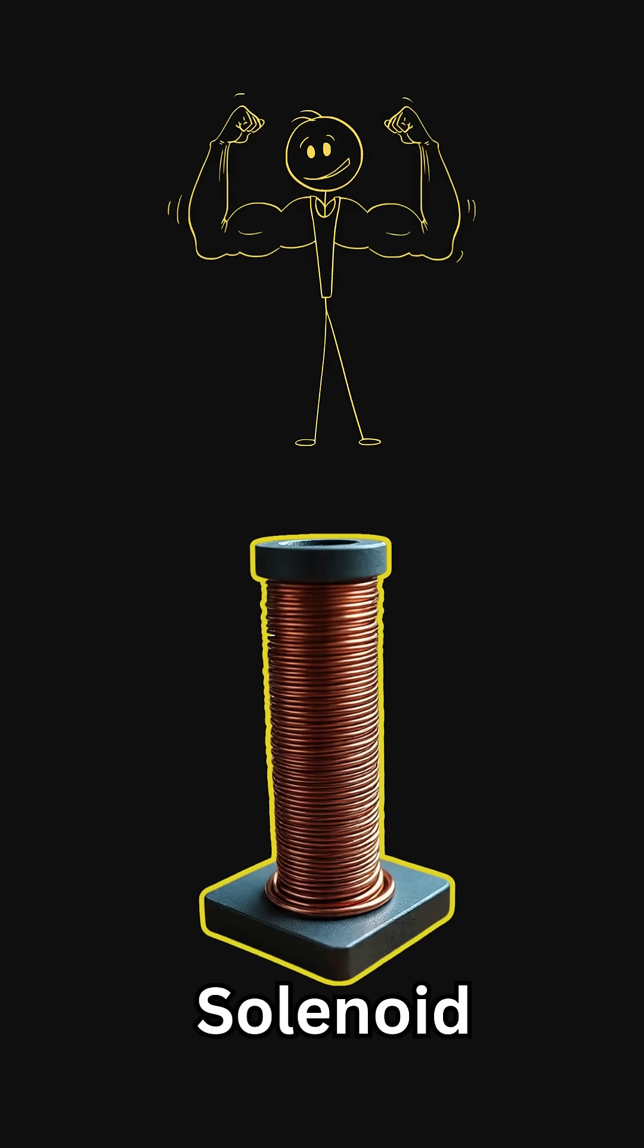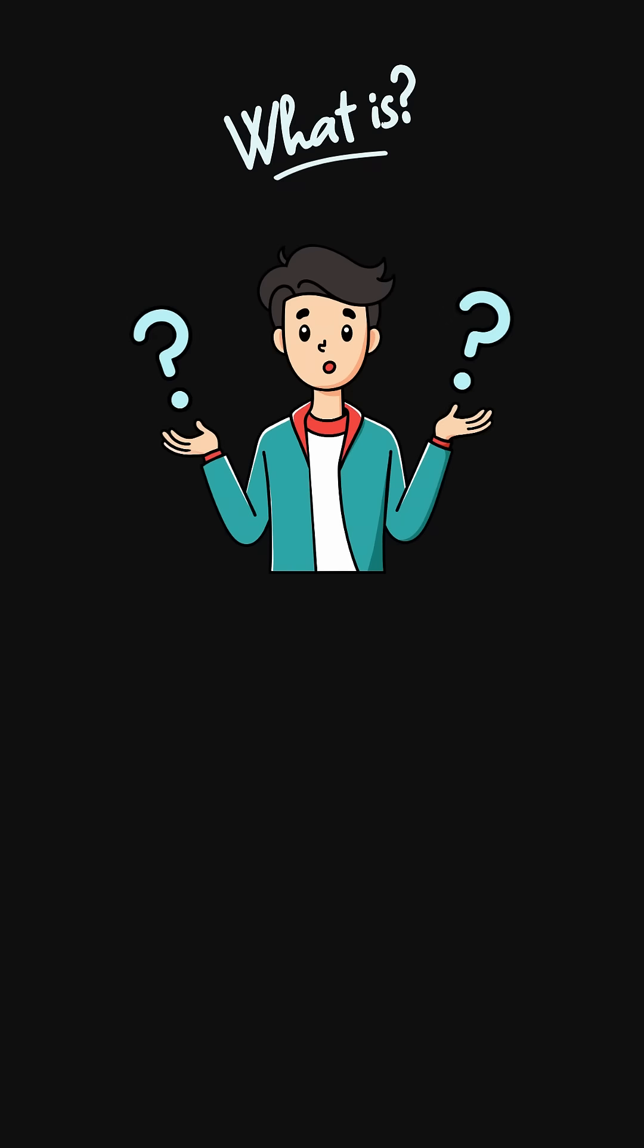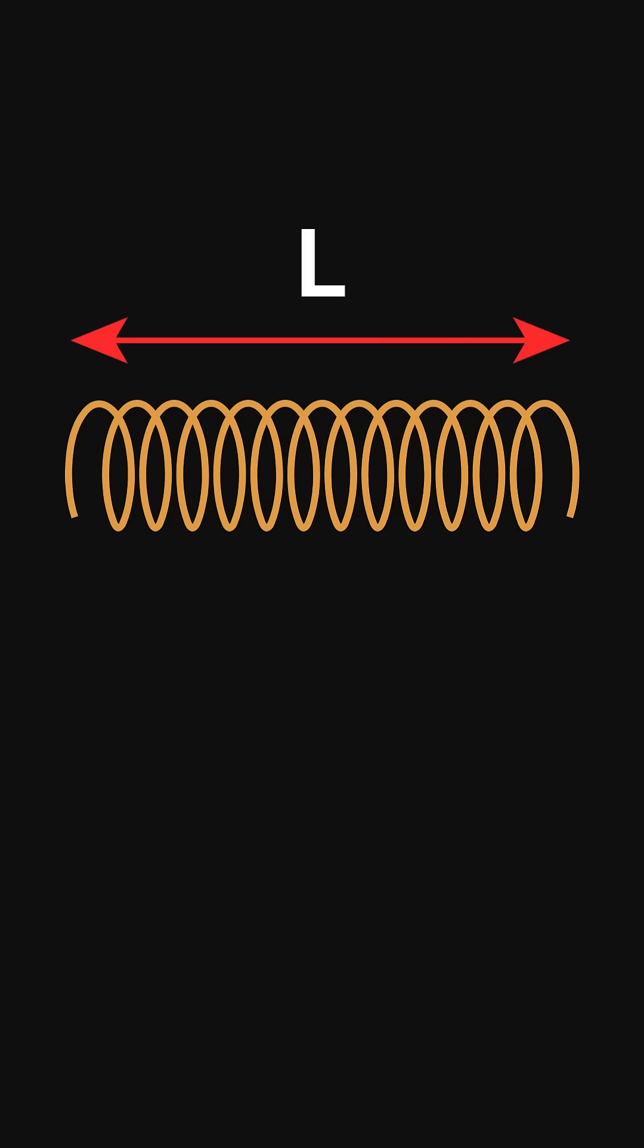A solenoid is one of the most powerful tools in physics, but what is it and why do we use it? A solenoid is simply a long coil of wire, and when electric current flows through it, something remarkable happens.